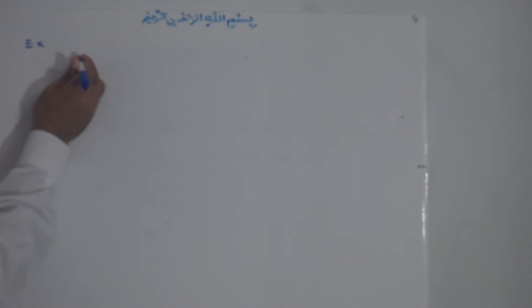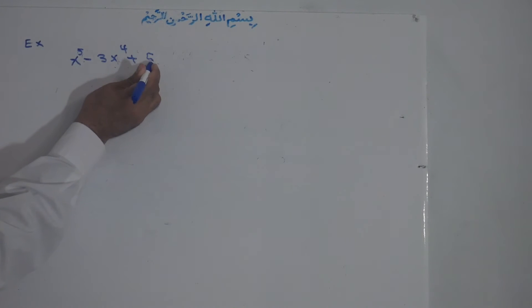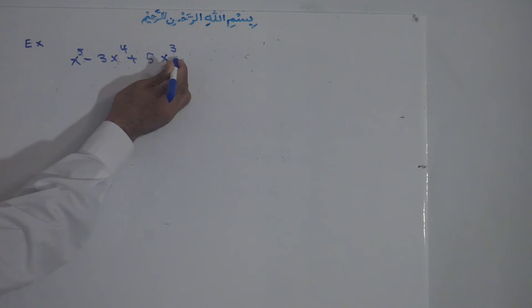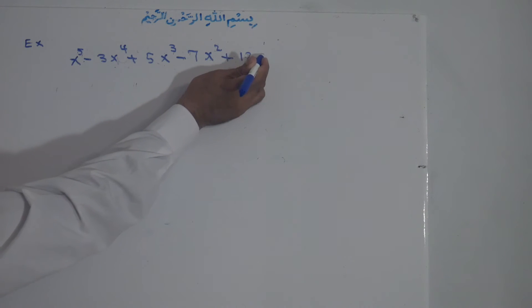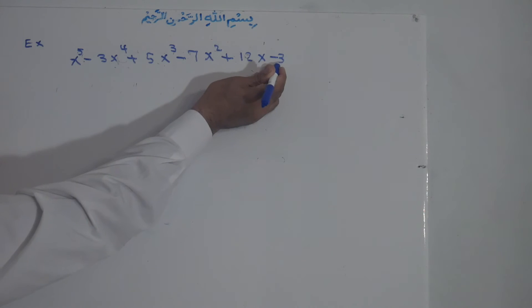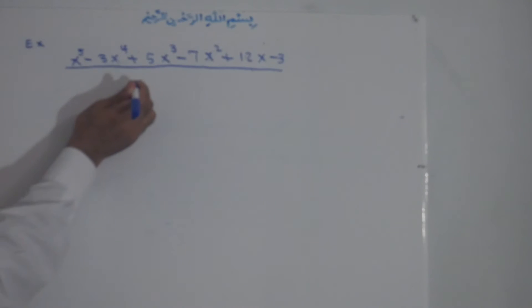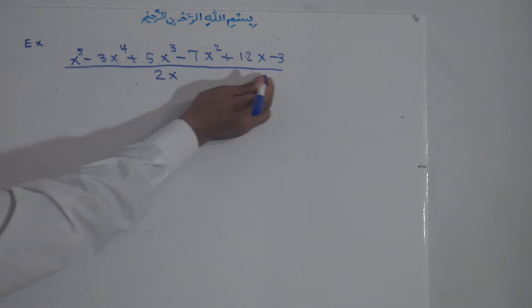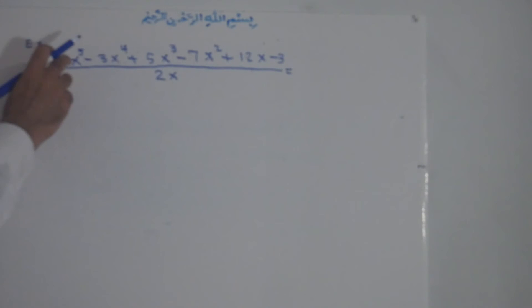For example, we have a polynomial: x to the power of 5 minus 3x to the power of 4 plus 5x to the power of 3 minus 7x to the power of 2 plus 12x minus 3. Now, we divide this polynomial by the monomial 2x.